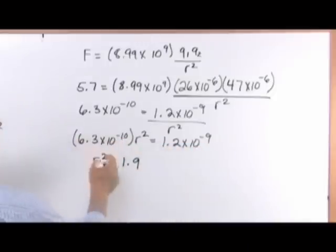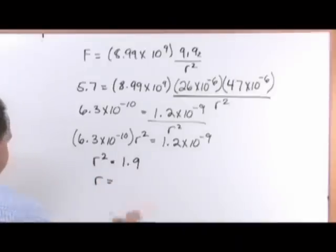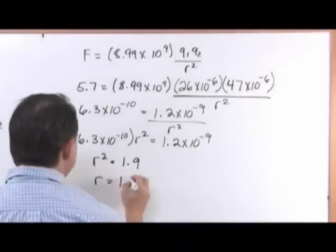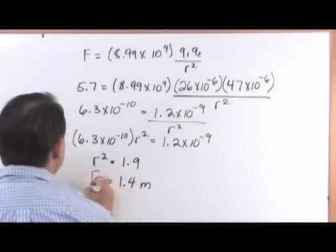When you take this and divide it by this, R, when you take the square root of both sides, is going to be 1.4, and you're always dealing in meters, so it's 1.4 meters.